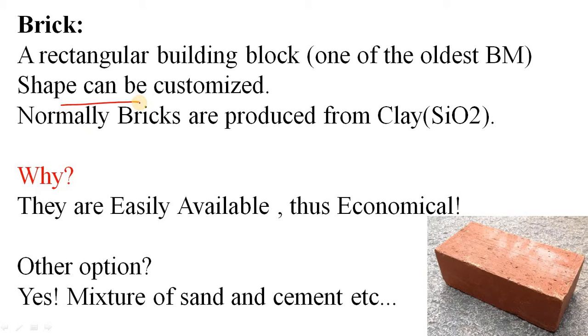Bricks are produced from clay because clay consists of kaolinite, which is the largest source of SiO2 or silicon dioxide, and silicon dioxide is the main component of brick. Why are bricks produced from clay? The answer is simple: because clay is easily available everywhere on earth, making it economical.